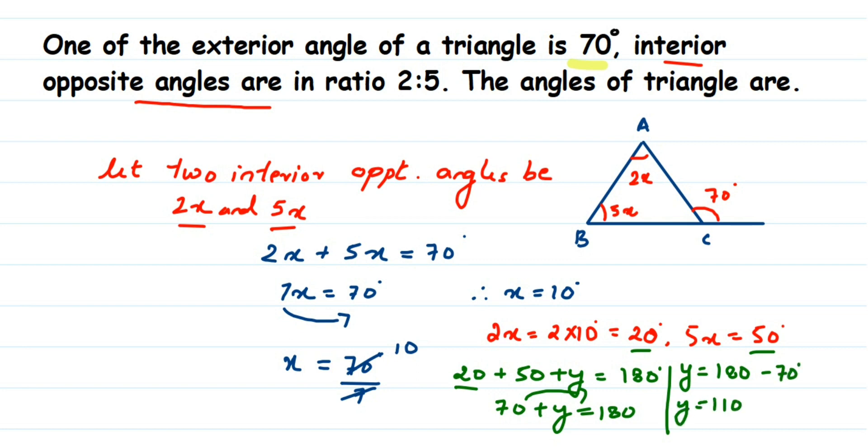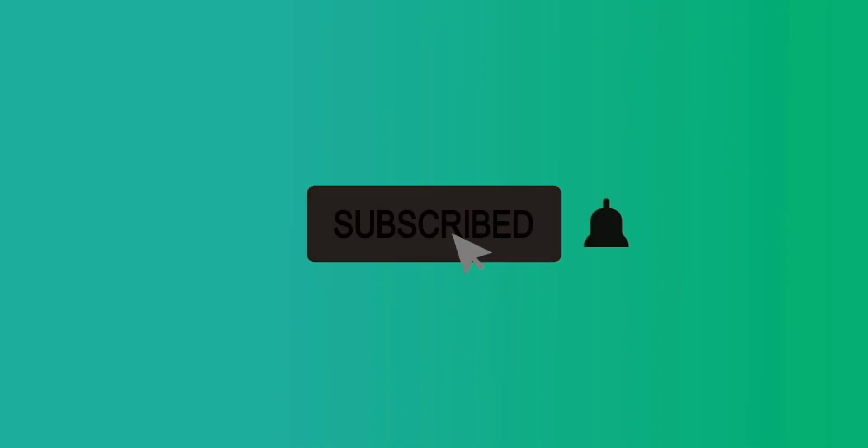So we have got all the three angles. The first angle is 20. Second angle is 50. Third angle is 110 degrees. So I hope this question is clear how we have solved. We have used the properties of triangle to solve this. In case you have any other question or doubt, you can drop a comment. Thank you so much for watching.